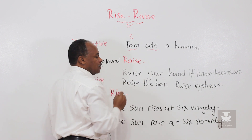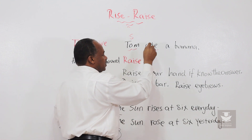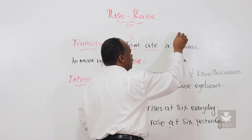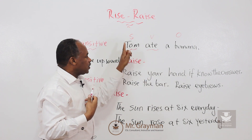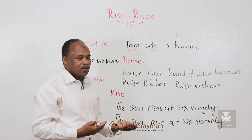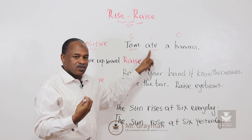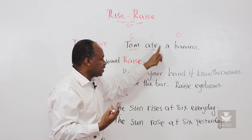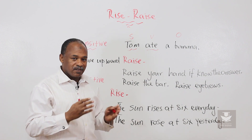Tom is a subject. A subject is the doer of the action. And 'eat' is the verb. And the banana is the object of the verb. So if I said 'Tom ate,' you would say 'what did he eat?' So 'Tom ate' is not a complete sentence — it doesn't make any sense. We need an object. So we say 'Tom ate a banana.' Then we understand clearly.